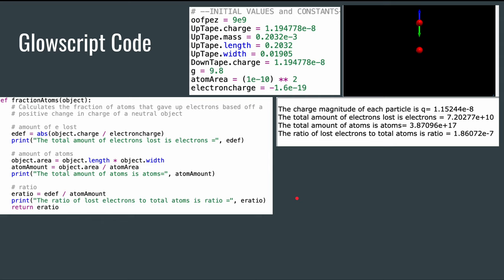Our final function here is essentially calculating that ratio. So edef is the amount of electrons lost. That's the total charge divided by the electron charge. We find the total amount of atoms by taking the total area divided by the area of an atom. Then we take the ratio of the electrons lost to the total amount of atoms. That's how we got our value for that. Here's the ratio right over here, 1.86 times 10 to the negative 7th.